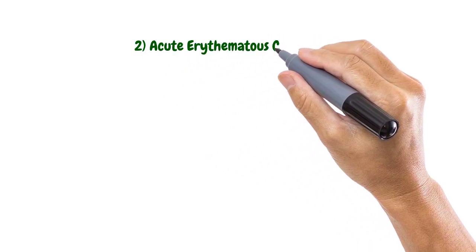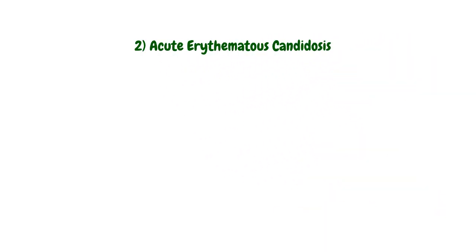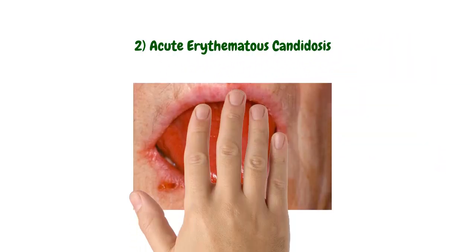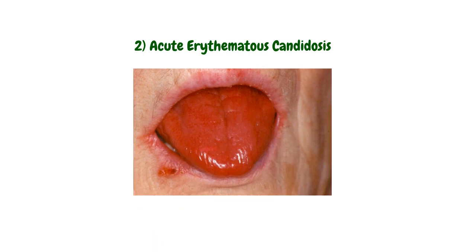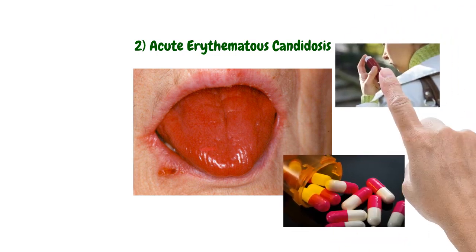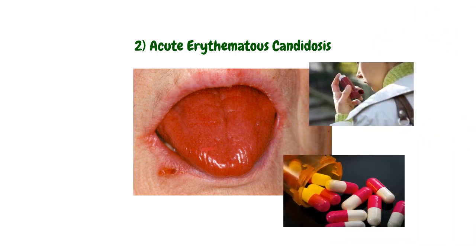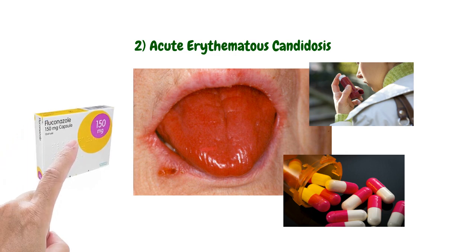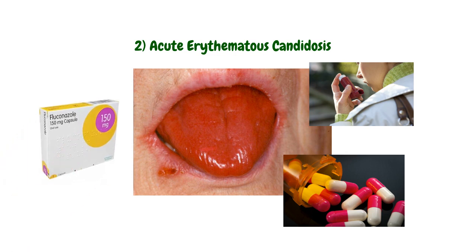With acute erythematous candidosis, you will see erythematous areas that are painful, typically on the dorsum of the tongue. The underlying cause is usually local, such as antibiotic use or the use of a steroid inhaler. Therefore, after correction of the local factors, the candidosis may resolve. You can also consider the use of a systemic antifungal agent such as fluconazole.